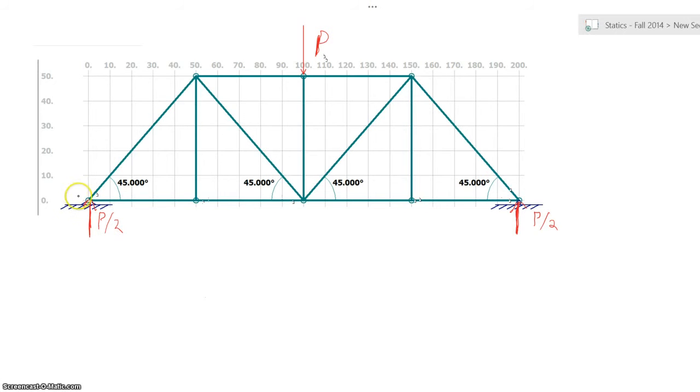A good practice when identifying the truss is to give all the joints names. This helps us to identify the members and the joints when we're doing our analysis. We'll start at the left-hand side of the truss, realizing that the forces in member AH are going to be identical to the forces in EF because of the symmetry of the truss we've designed.